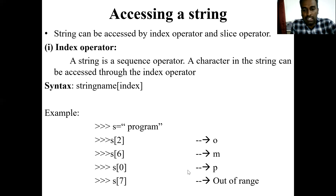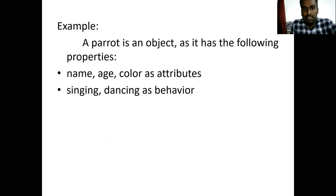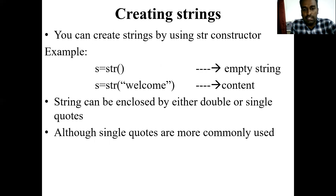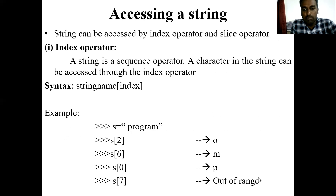That property is called not growable. Previously at the start of the class, we saw that a string is immutable — it is an example of immutable.